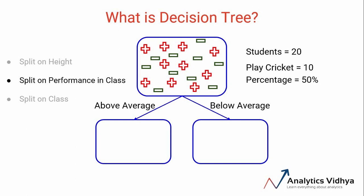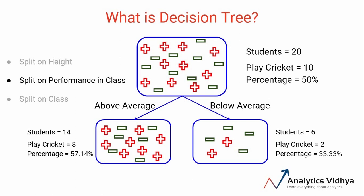Let's split the population based on performance. Here the performance is defined as either above average or below average. We'll again divide the population based on these categories. Here 14 students are above average and out of these 14 students, 8 play cricket and hence the percentage will be around 57 percent. In the below average category we have a total of 6 students out of which 2 play cricket and the percentage will be around 33 percent.